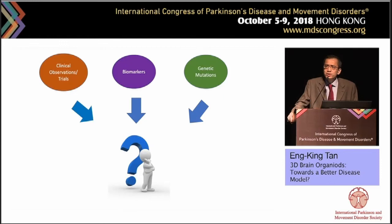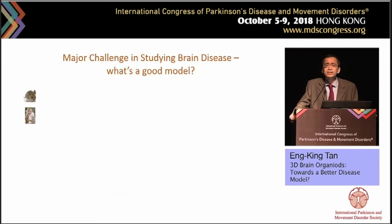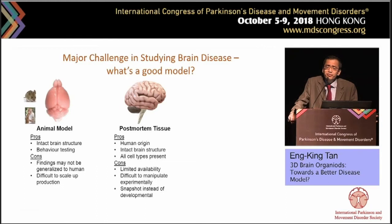For many of us involved in clinical studies and clinical trials, whether you identify a biomarker or identify new mutations in a gene, ultimately the fundamental question is: what is the underlying physiology and pathophysiology? To address this, you need a model. The major challenge in studying brain diseases is — what is a good model? We know traditionally that you have post-mortem tissues to work on; they are great but have limited availability and give only a snapshot instead of developmental milestones.